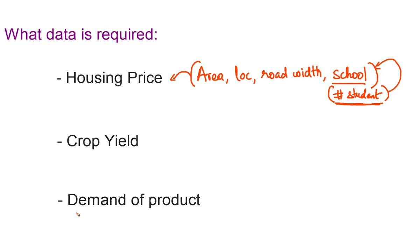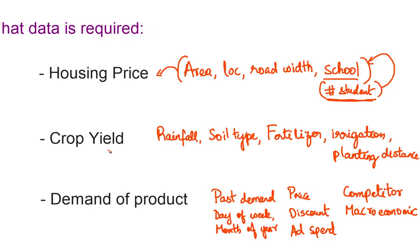Pause the video for a second and give it some thought. Here's my list: to predict crop yield, I would look for things like the amount of rainfall, the soil type, fertilizer used, irrigation type, and the planting distance between each plant. These are some tentative variables you might want to collect in order to predict what the crop yield is going to be.